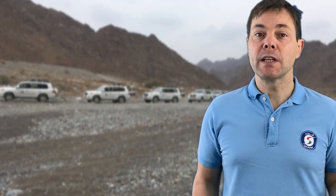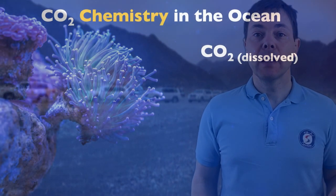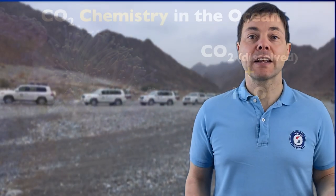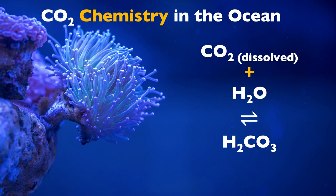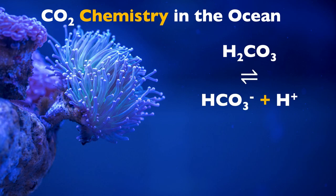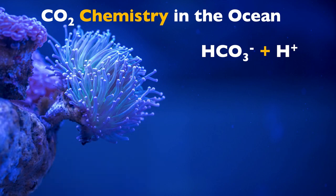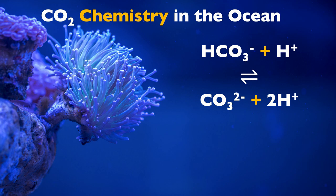If we look at CO2 chemistry in the ocean, we start with CO2 dissolved in seawater, and the other common species in this medium is water itself. CO2 and water can combine to form carbonic acid, H2CO3. Carbonic acid is not very stable; it can dissociate under normal conditions and lose a hydrogen, giving you a bicarbonate ion, HCO3 minus, plus a proton. That species can further react to give rise to a carbonate ion, CO3 2 minus, with two hydrogens released.